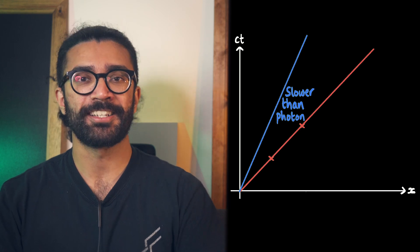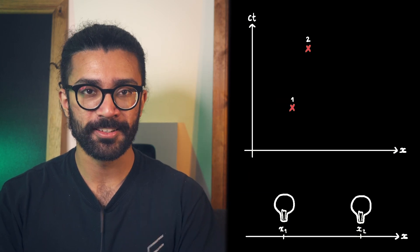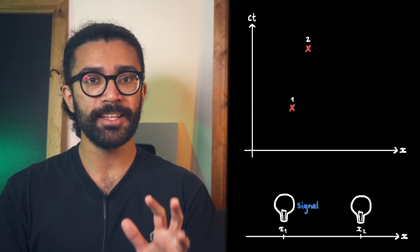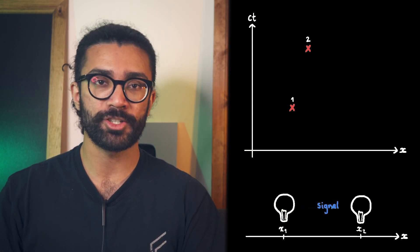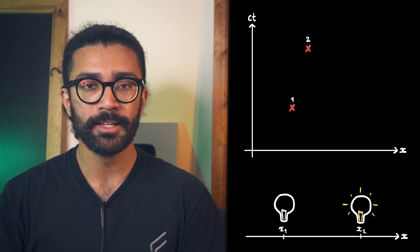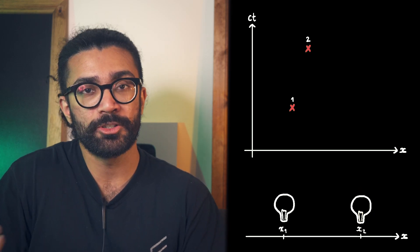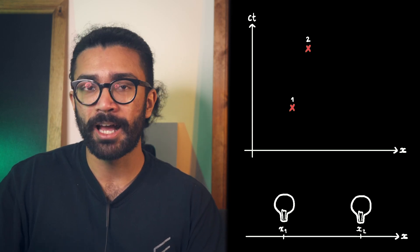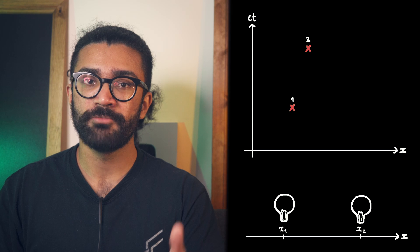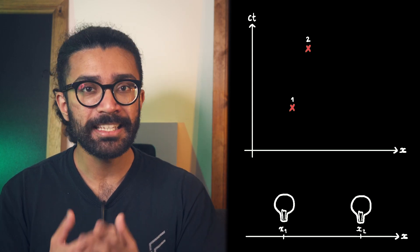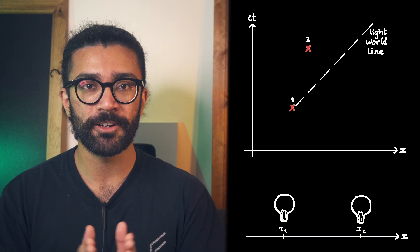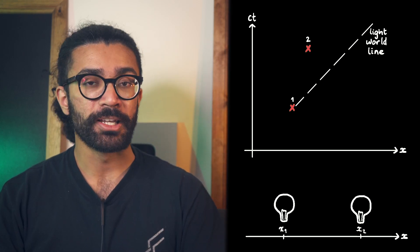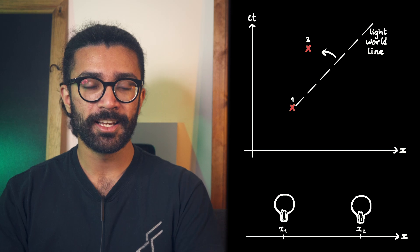This allows us to come back to our two events. We were talking about whether the first event could send a signal of some sort to the location and time of the second event before the second event actually took place. Or in other words, could event one potentially have caused event two? The answer to this question is yes. We can easily see this by drawing a 45 degree line out from event one. Since event two is on this side of the 45 degree line,